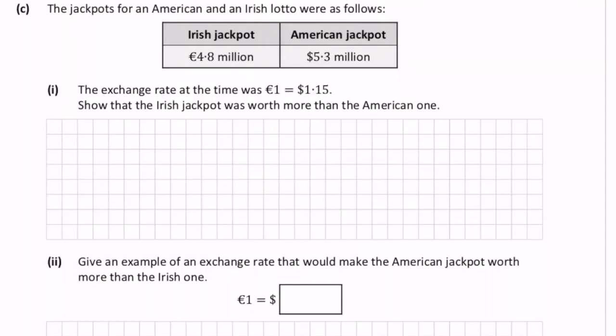Part C. The jackpots for an American and Irish lotto were as follows. The Irish jackpot was 4.8 million, and the American jackpot 5.3 million.